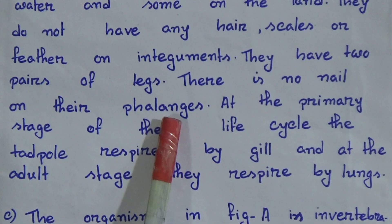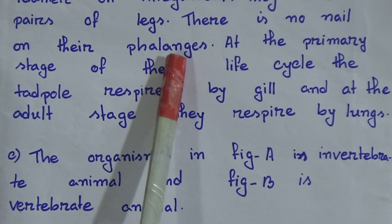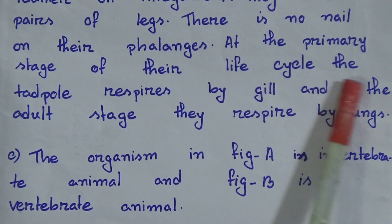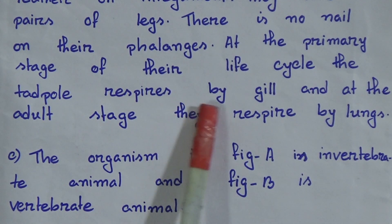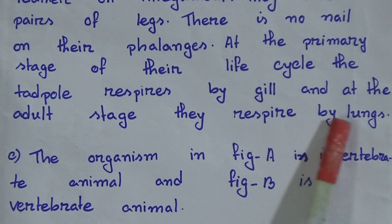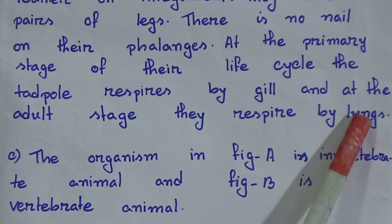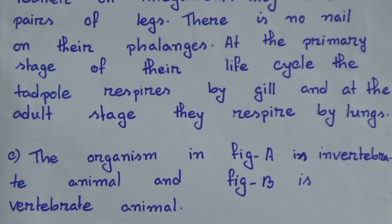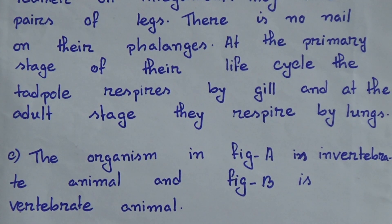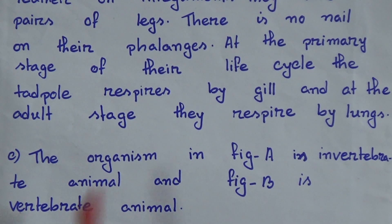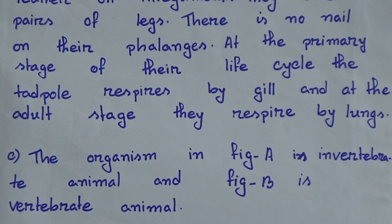At the primary stage of their life cycle, the tadpole respires by gills and lives in water. At the adult stage, they respire by lungs and live on land. So that is why a toad is called an amphibian — in childhood it lives in water, and in the adult stage it lives on land.